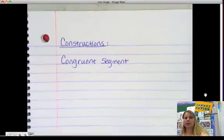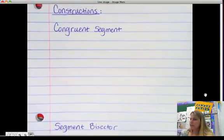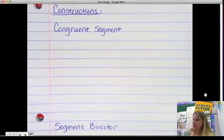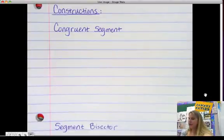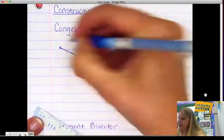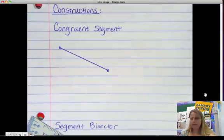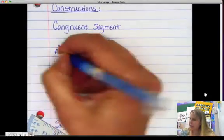So, I'm going to change my paper here. We're going to do two constructions. We're going to construct a congruent segment, and we're going to construct a segment bisector. So, a congruent segment, what does that look like? Well, I'm just going to draw a segment. I don't care how long it is, just some length. And we're going to call this segment AB.